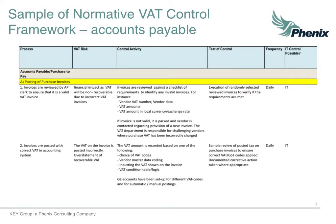Slide 21 shows a sample of a normative control framework that can be used as a yardstick. Continuing with the risk area of incoming invoices, we show here a benchmark example of a normative AP process. The control activity, the test of control, and the frequency are important for an effective and efficient implementation and show how an organization is in control. The current as-is process can be measured against it and the outcome results in gaps, and a sound decision can be taken whether or not to close them.